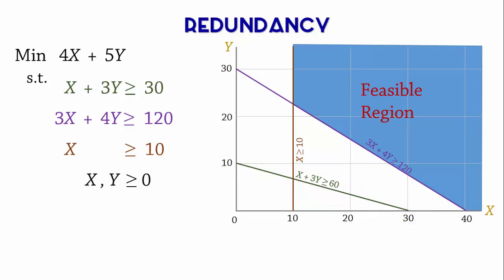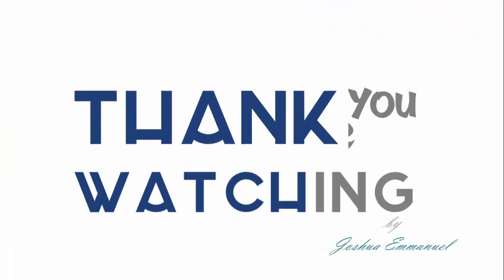So a redundant constraint is one that does not affect the feasible region. In essence, we could remove a redundant constraint without changing the feasible region or optimal solution. And that concludes this video on special cases in solving linear programming problems. Thank you for watching.